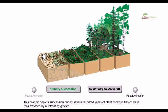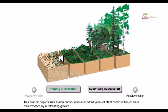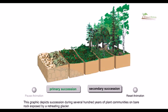In primary succession, there is no soil present at first, so it takes much longer to get soil initially. Soil comes as a result of weathering activities, and once soil forms, smaller plants begin to grow. Finally, larger plants take over the smaller ones, and we arrive at the final condition of the habitat we see today.